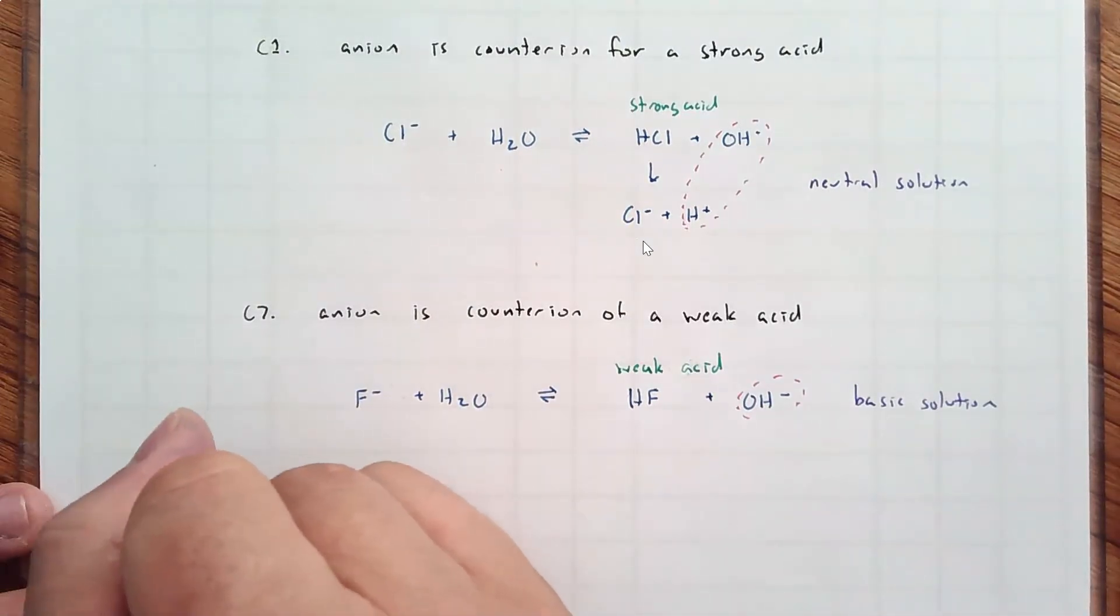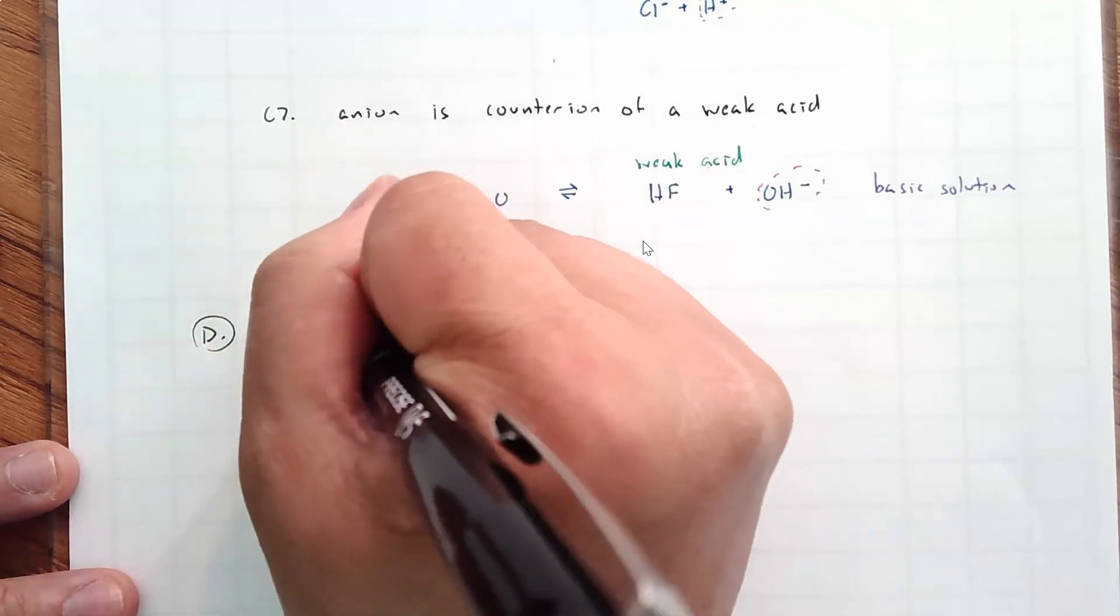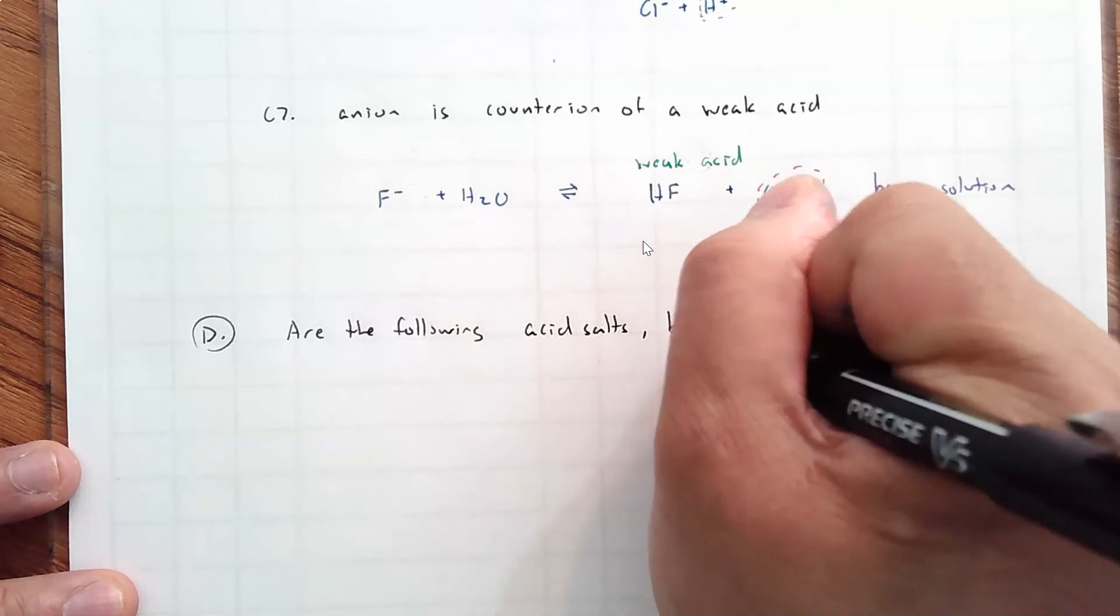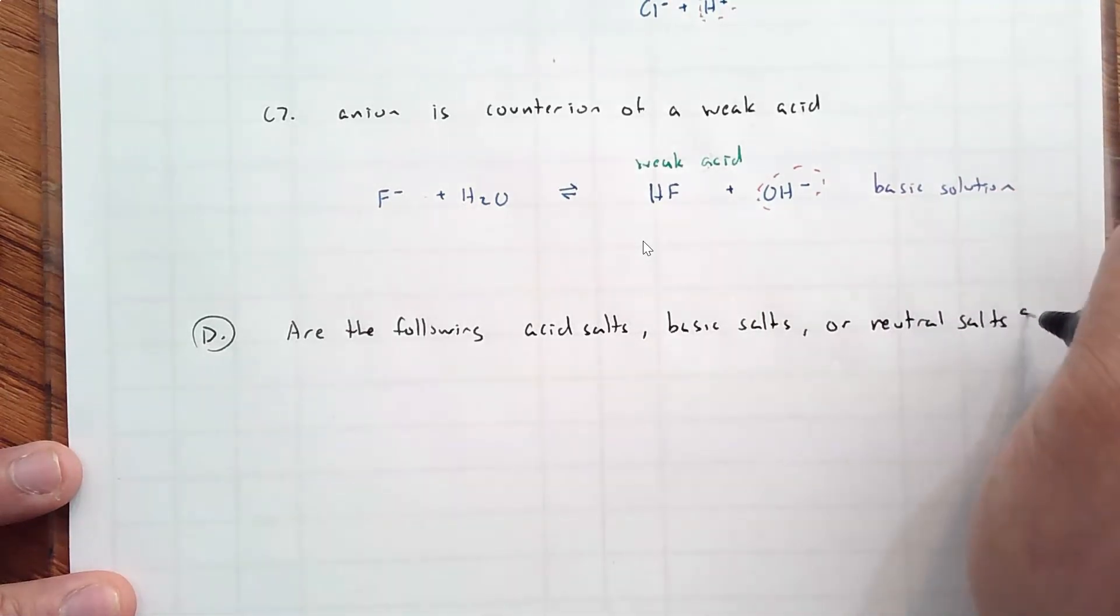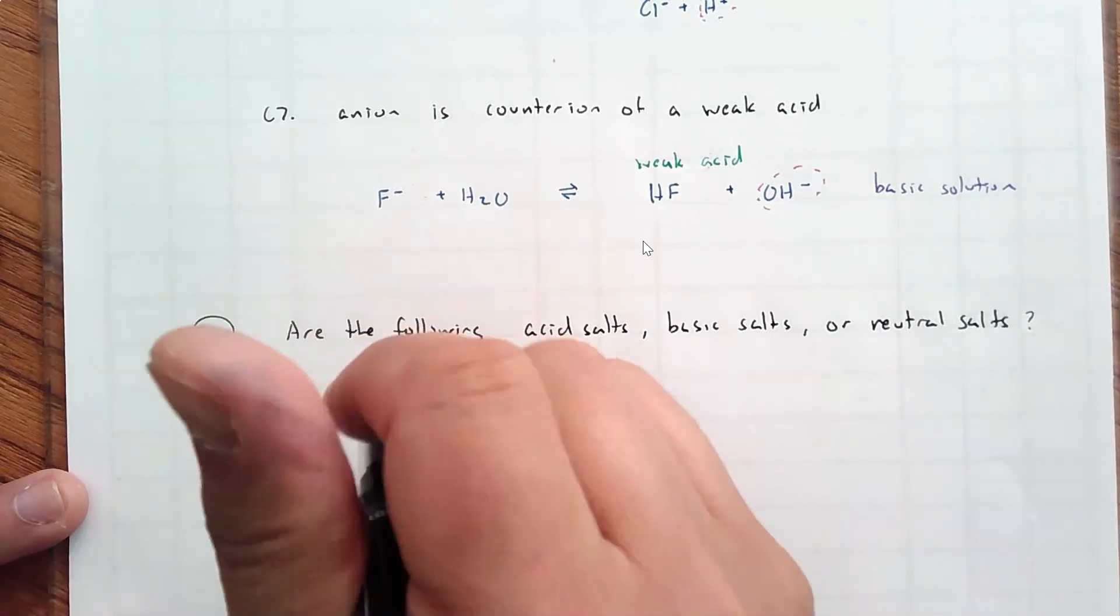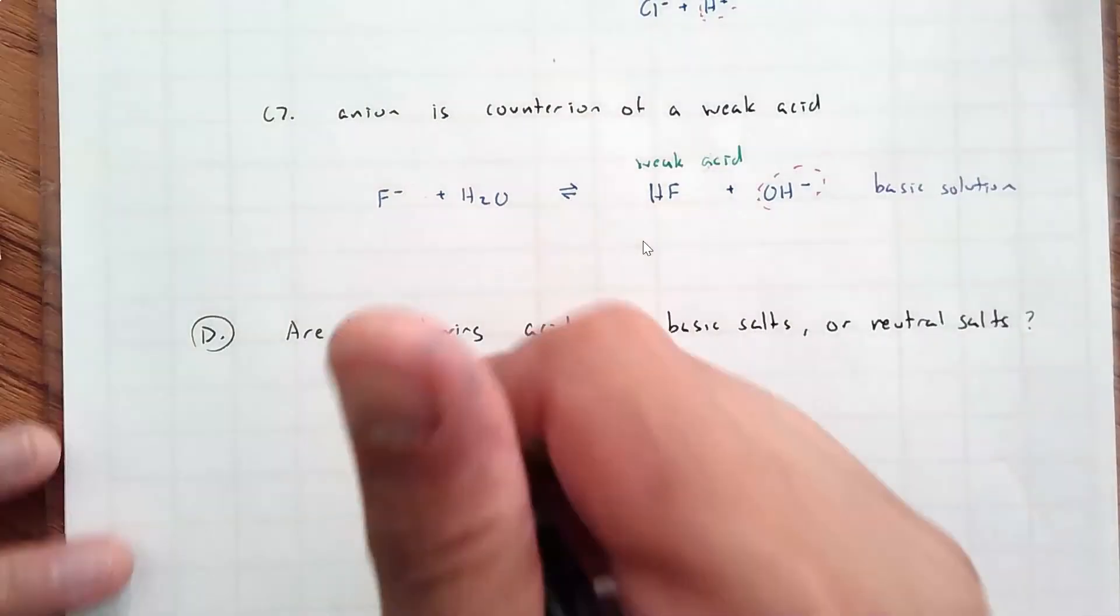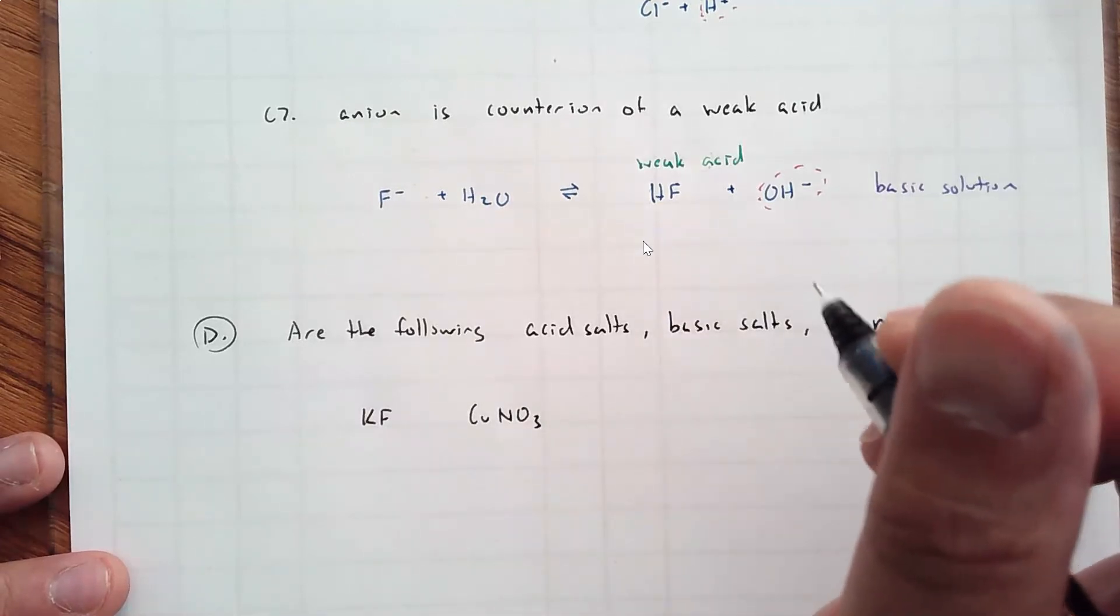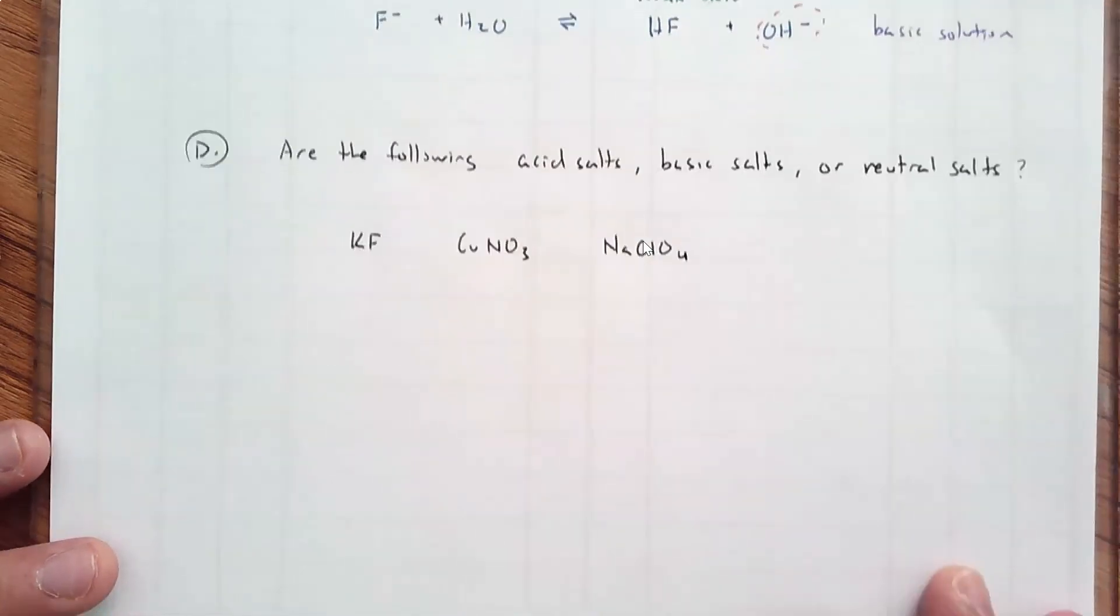Now, what's the trick here? We're going to do examples. Let's do the following: are the following acidic salts? We'll try KF. That was in the title. Copper one nitrate. That's a good idea. And how about this one? NaClO4.